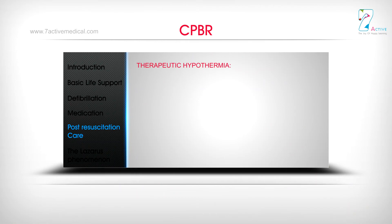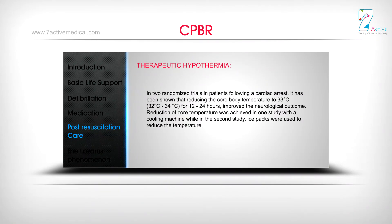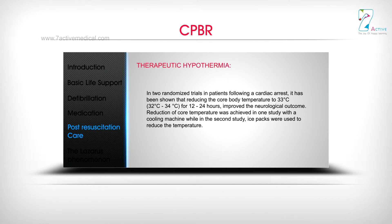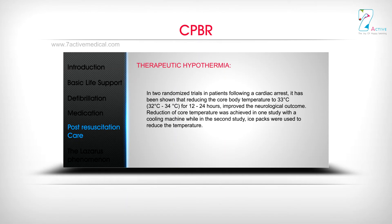Therapeutic Hypothermia: In two randomized trials in patients following cardiac arrest, it was shown that reducing the core body temperature to 33 degrees Celsius (range 32–34°C) for 12 to 24 hours improved neurological outcome. In one study, a cooling machine was used; in the second study, ice packs were used to reduce the temperature.